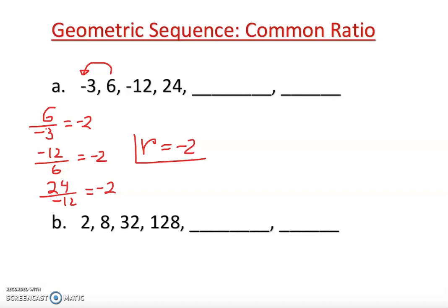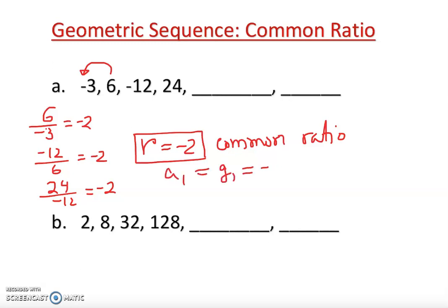This is called the common ratio. Once we have the common ratio, and also z1 — the first term — is equal to -3, as you can see. Once we know the common ratio, I can just do the opposite and multiply by -2.